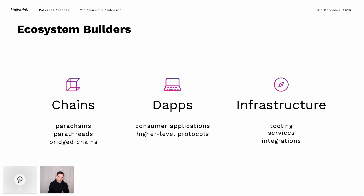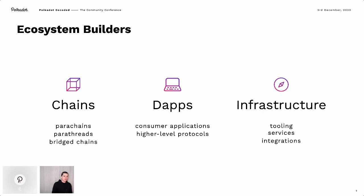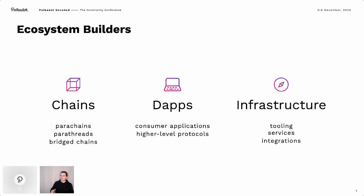You have people building chains — parachains, parathreads, bridge chains, a lot of the stuff that Rob just talked about, and it's also the stuff I want to talk about in this talk. But you also have what I call loosely decentralized applications — either consumer-facing applications or higher-level protocols being deployed on these parachains. And then infrastructure, which is a catch-all term for tooling, services, and integrations that aren't directly business logic but still make Polkadot more usable or more powerful.